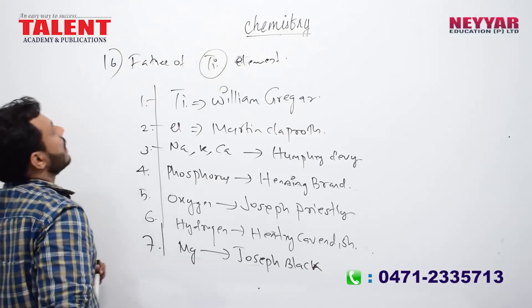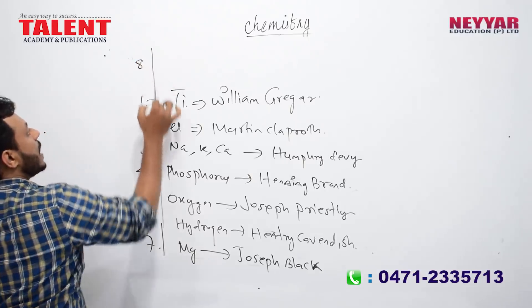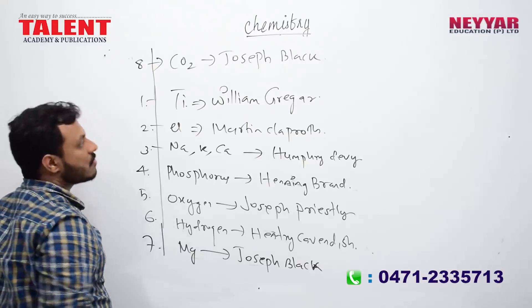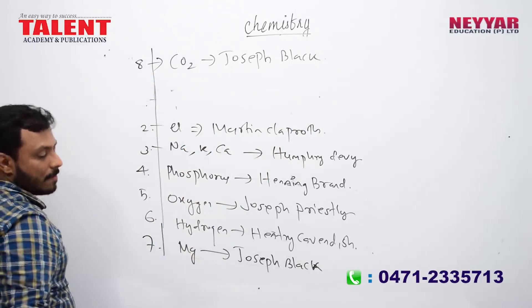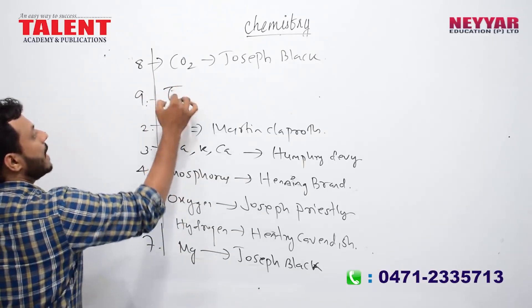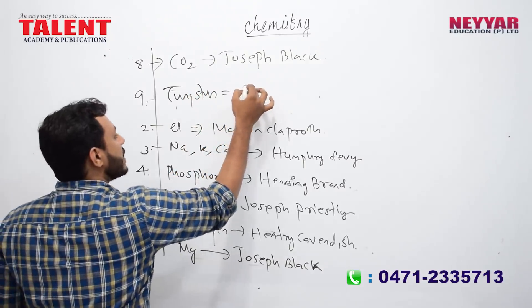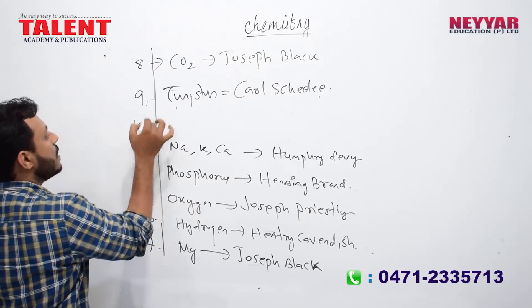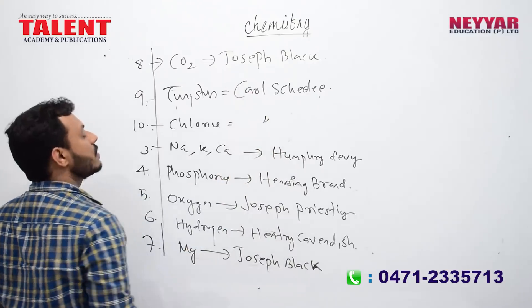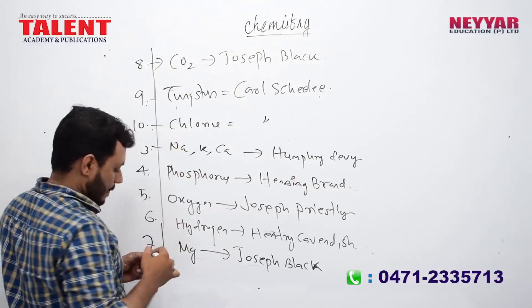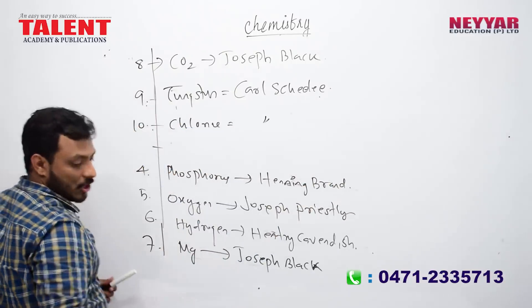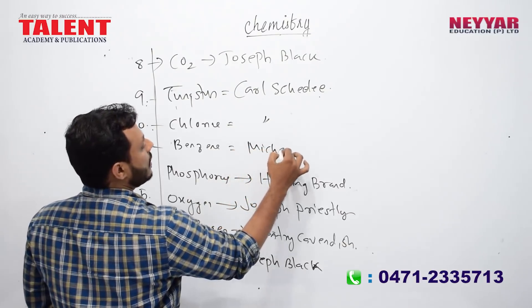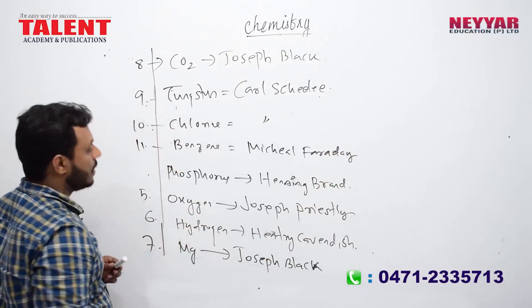Carbon dioxide was discovered by Joseph Black. Chlorine was discovered by Carl Wilhelm Scheele. Benzene — Scheele is also the answer for chlorine. Benzene is the next element discussed.